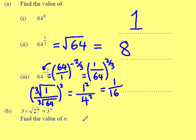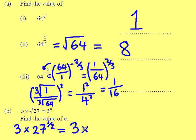The next question is slightly more challenging: 3 multiplied by the square root of 27, and we need to write all of that as 3 to some power n. Let's deal with the square root of 27 — that's the same as 3 multiplied by 27 to the power of a half. We know 27 can be written as a power of 3, so that will be 3 from the beginning, times 3 cubed — which is 27 — all to the power of a half.